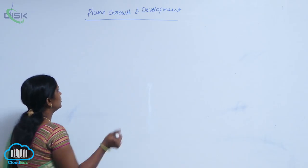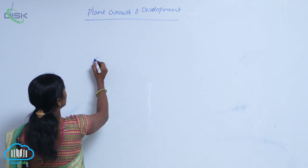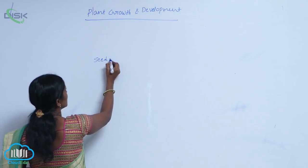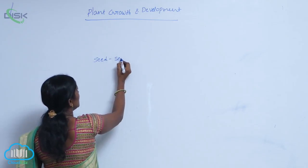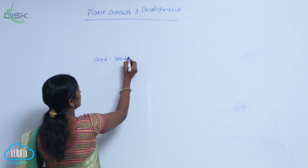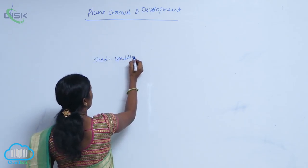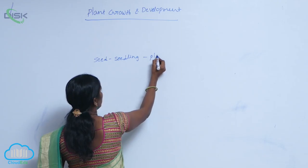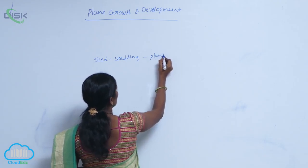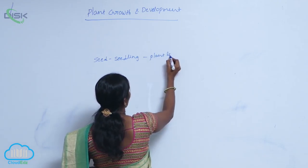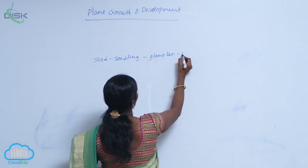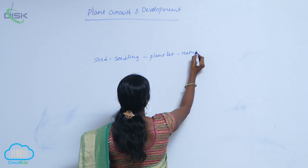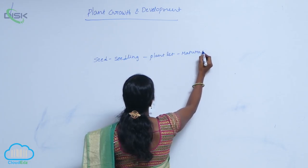The life stages begin from seed to seedling, then seed into plantlet, plantlet to mature plant, and finally the mature plant stage.